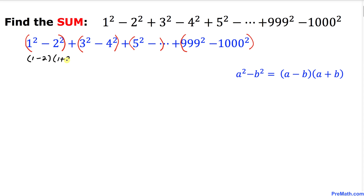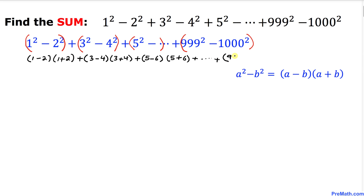The next group is (3 − 4)(3 + 4), then (5 − 6)(5 + 6), and things go on and on until we have (999 − 1000)(999 + 1000).